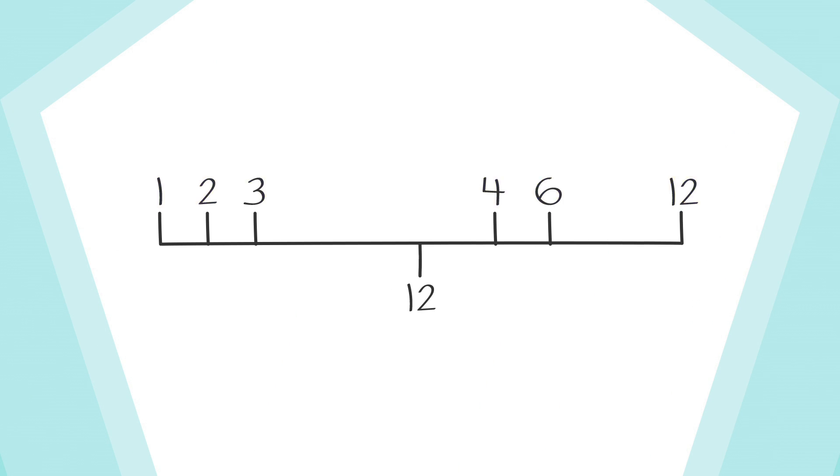We start with our factor tree and ask, do any of these branches have factors of their own? If so, we generate secondary branches. For this exercise, we need to leave out the branches 1 and 12, because 1 is neither prime nor composite, and factoring 12 again will simply take us back to square 1.